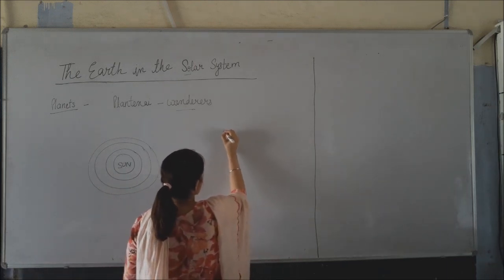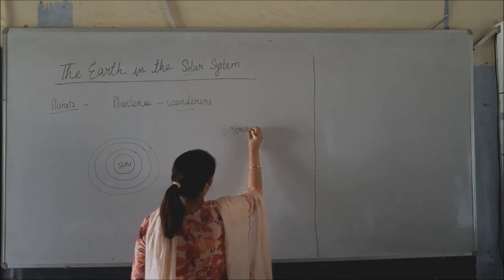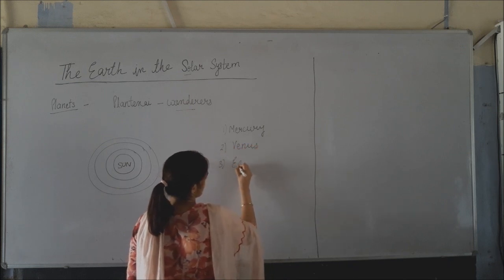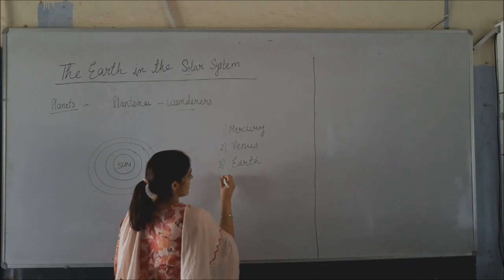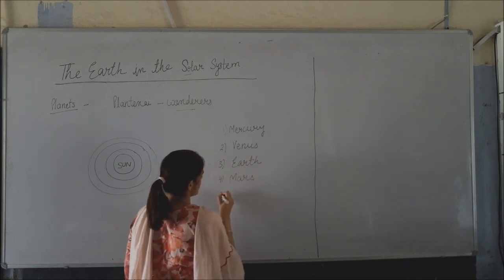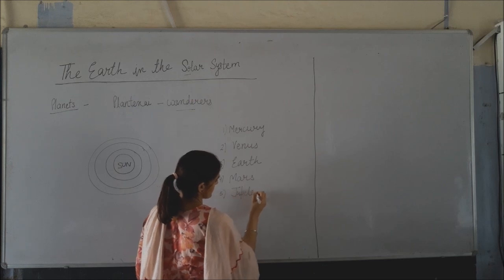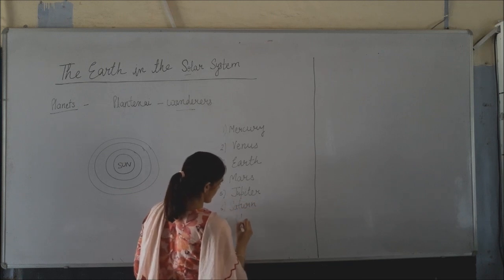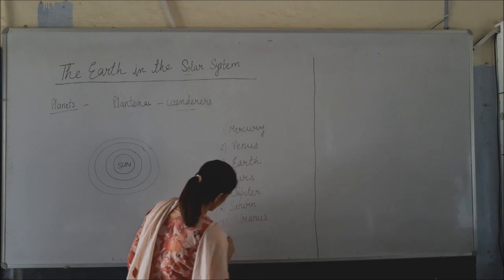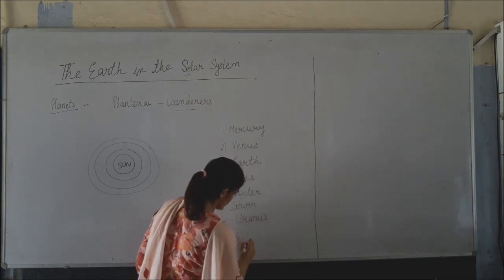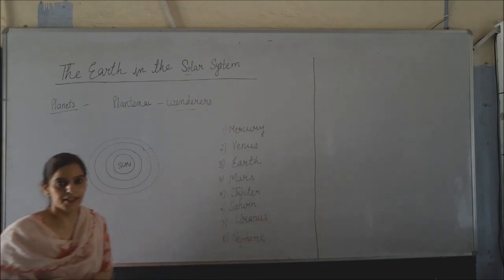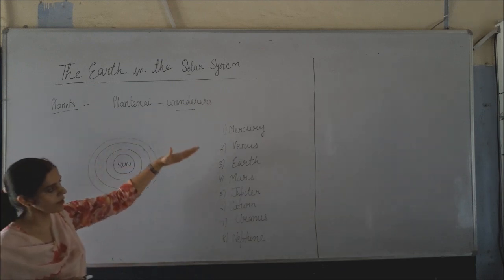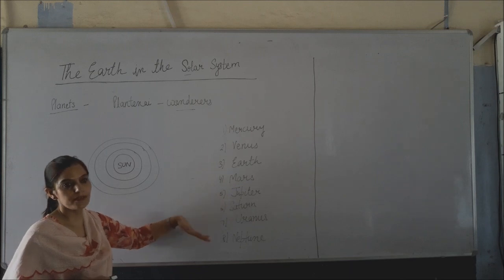There are 8 planets. In order of their distance from the sun, they are: Mercury, Venus, Earth, Mars, Jupiter, Saturn, Uranus, and Neptune.